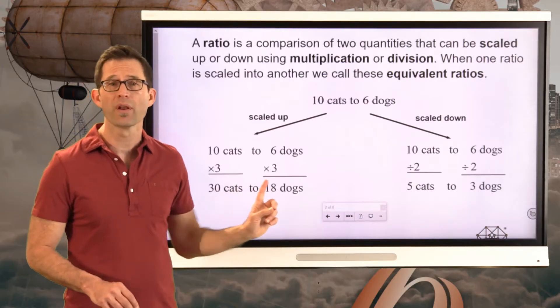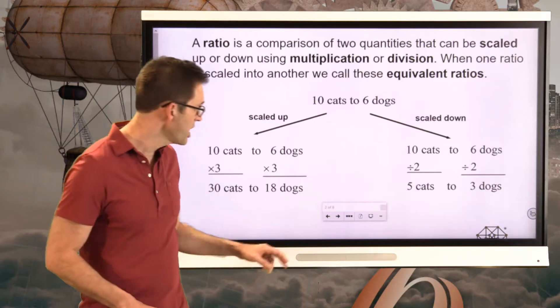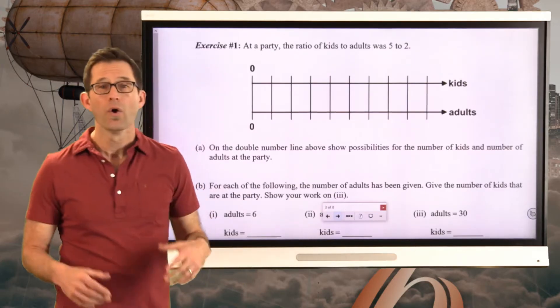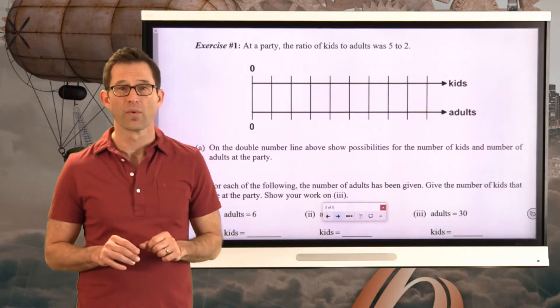I can multiply both the numbers in a ratio or I can divide both the numbers in the ratio. So let's play around now with what's known as a double number line. This is a fantastic way of looking at equivalent ratios.